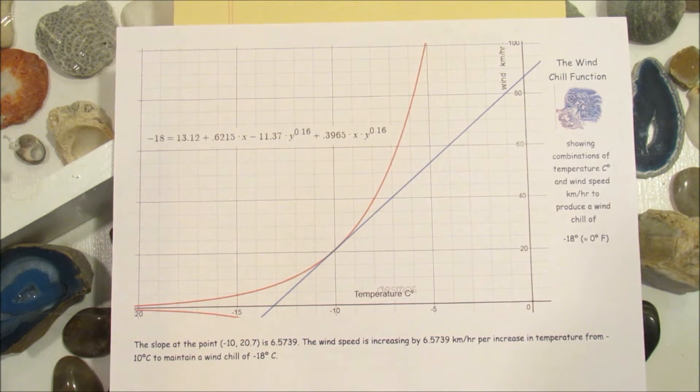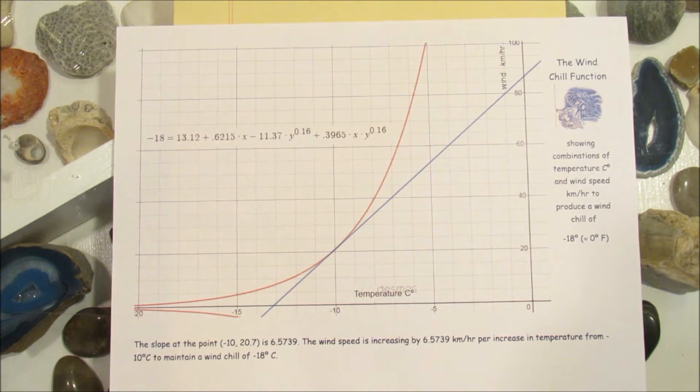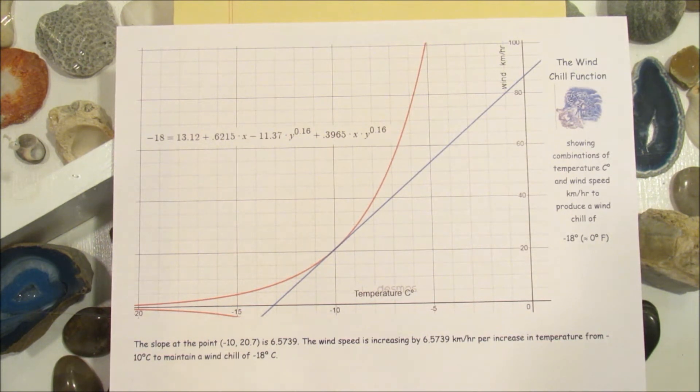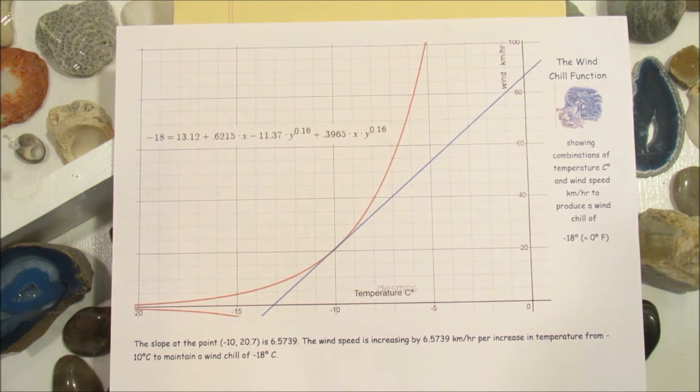In this case, we have a formula for windchill. We have the windchill set equal to negative 18 Celsius, which is approximately 0 degrees Fahrenheit. This is a fairly simple formula for windchill. Ours involves temperature in Celsius as x and wind speed in kilometers per hour for y. The two variables affect each other. In order to keep it equal to negative 18, as you change one, the other one changes.